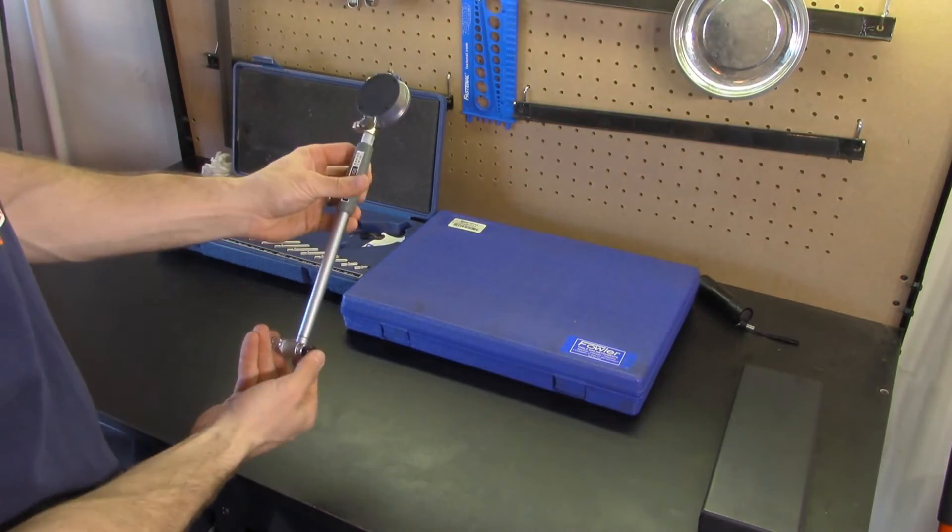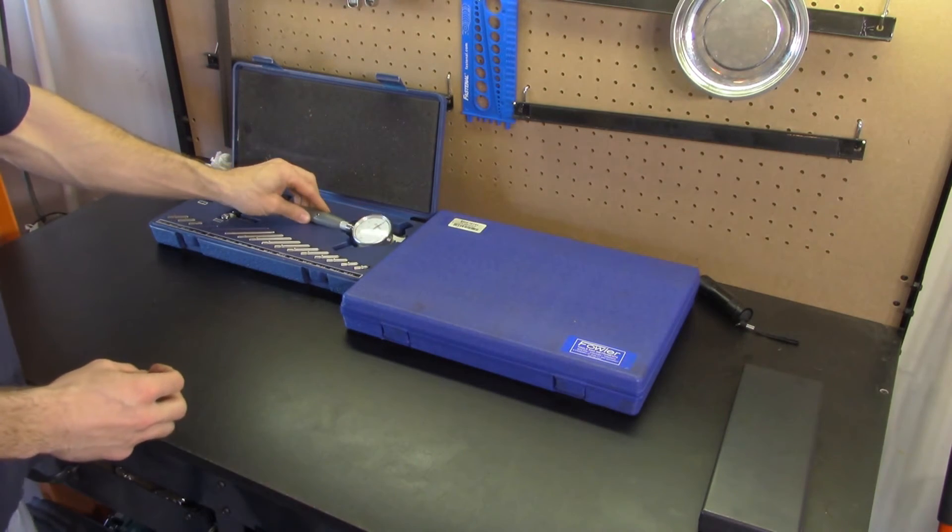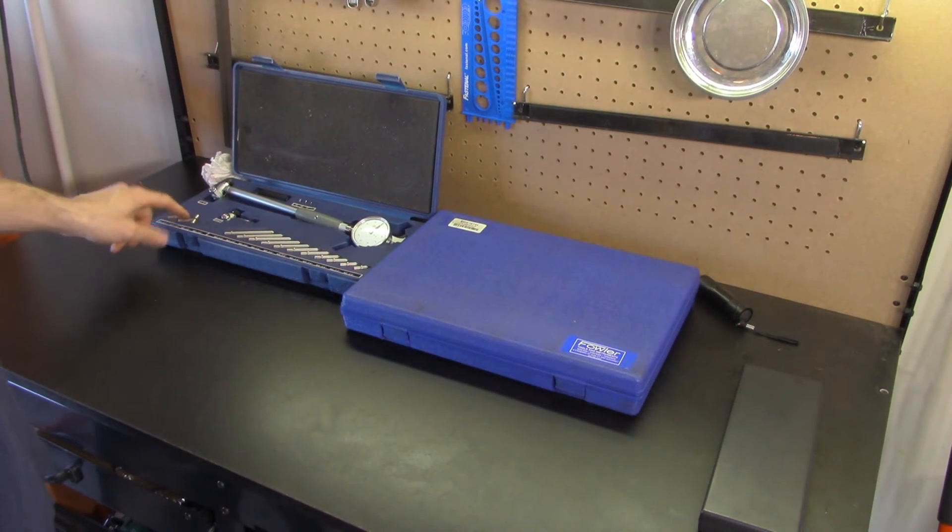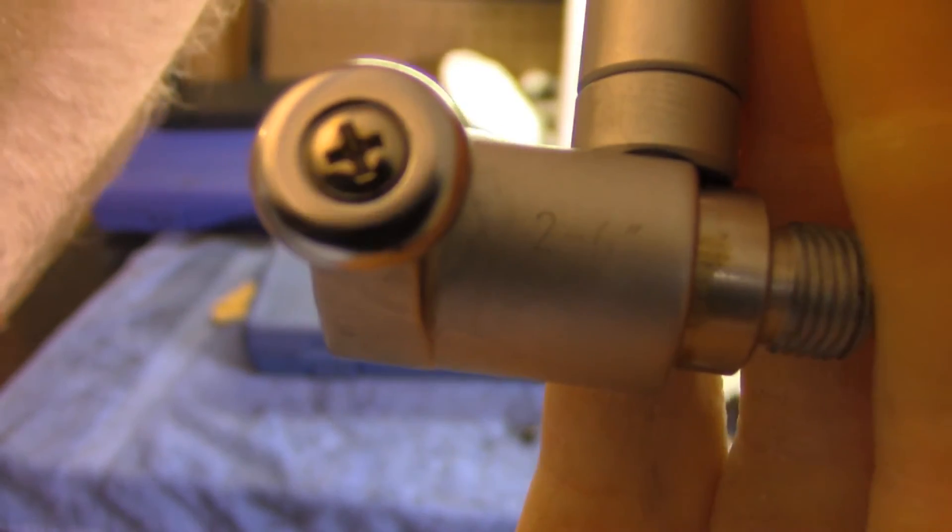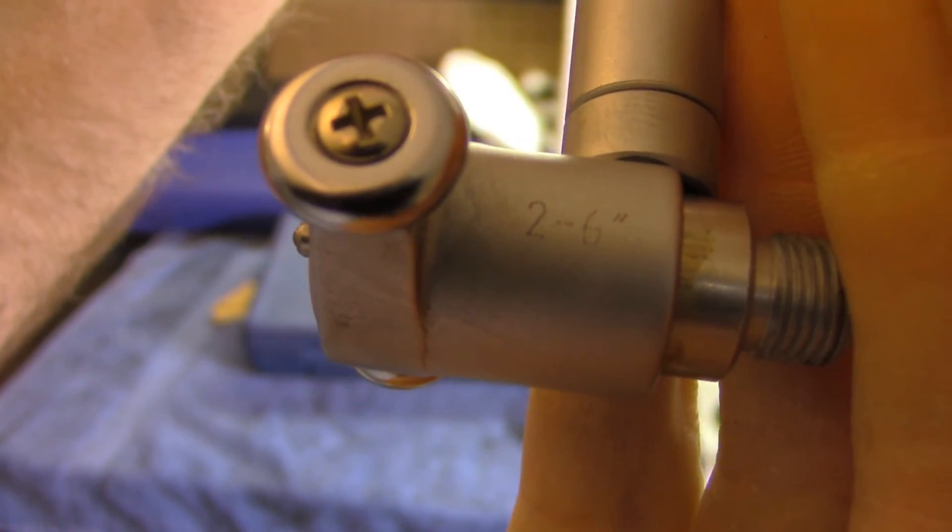Lastly we have a dial bore gauge. This tool has limited travel, so it includes various length anvils and spacers to read anything between 1.4 and 6 inches. You will notice this measuring head will only accommodate measurements from two to six inches.